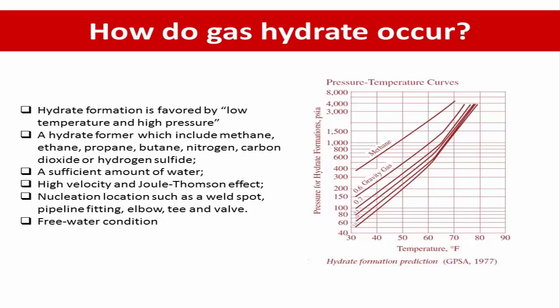Nucleation locations include well spots, pipeline fittings such as elbows, tees, and valves. The last phenomenon is the free water condition. Since hydrate will occur at a moderate water level — not too much and not too little — the free water condition can be considered a gross nucleation sign.